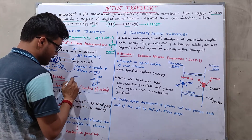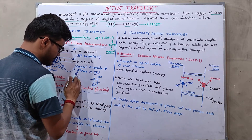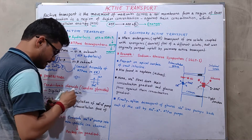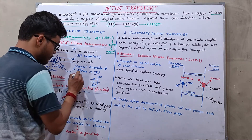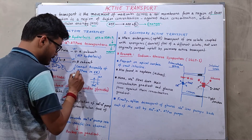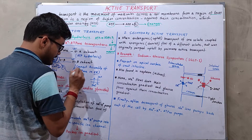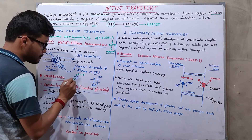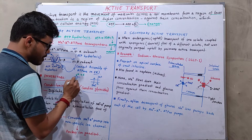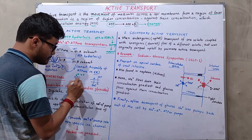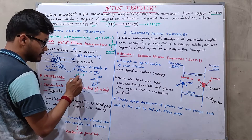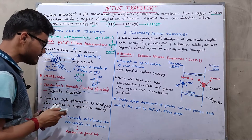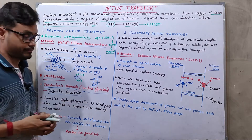These inhibitors block the dephosphorylation of the sodium-potassium pump when applied to the extracellular environment. If digitalis or ouabain is applied to the extracellular phase of the pump, it blocks dephosphorylation from the alpha subunit of this transporter.